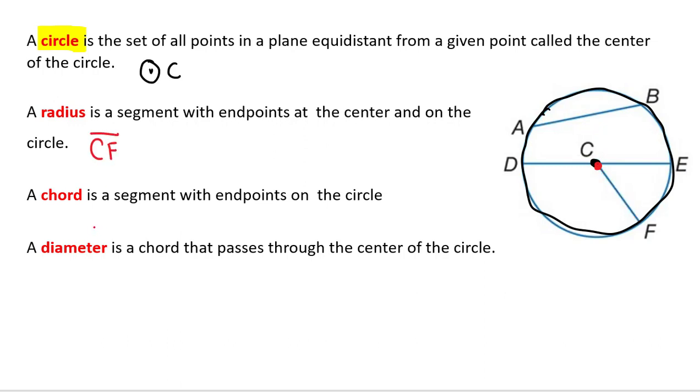A chord is a segment with the endpoints on the circle. So it's not a diameter. So AB is a chord. It doesn't go through the center. And then our diameter is a chord that passes through the center of the circle. So DE is a diameter.